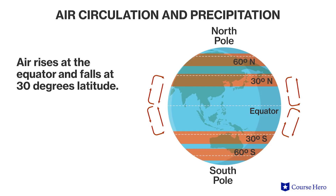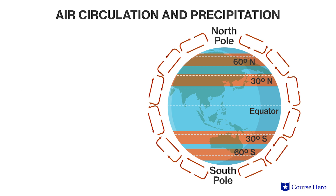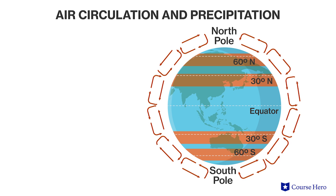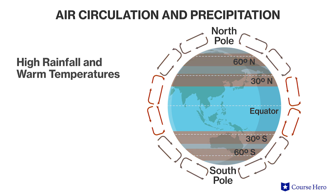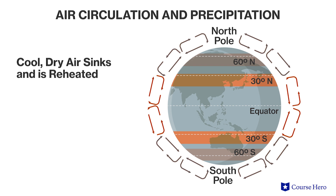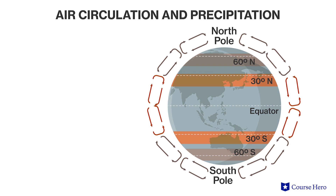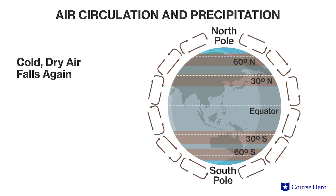Air rises at the equator and falls at 30 degrees latitude. Air rises again at 60 degrees and falls at the poles. This pattern exists in both hemispheres. These large wind patterns affect climate because they determine global patterns in rainfall. Near the equator, where air is rising, there is high rainfall and warm temperatures. At 30 degrees north and south, cool dry air sinks and is reheated, resulting in some of the world's great deserts. At 60 degrees, air rises again and drops rainfall, forming the cool temperate forests. At the poles, cold dry air falls again, leading to low rainfall polar climates.